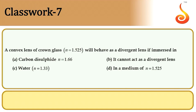Example 7: A convex lens of crown glass of refractive index 1.525 will behave as a divergent lens if immersed in a medium of higher refractive index. The correct medium is carbon disulfide with refractive index 1.66. Option A is the correct choice.